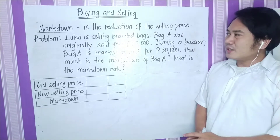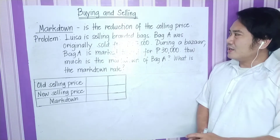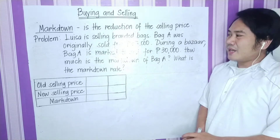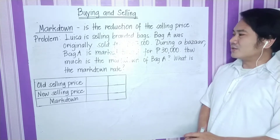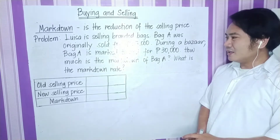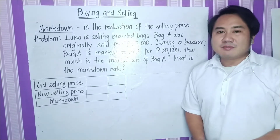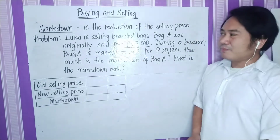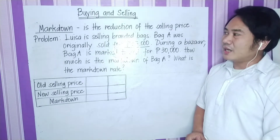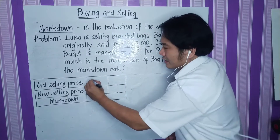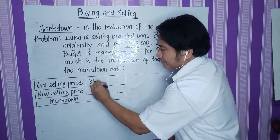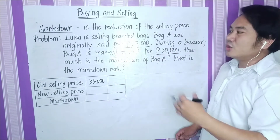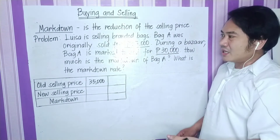Let us read the problem. Louisa is selling branded bags. Bag A was originally sold for 35,000 pesos. During a bazaar, bag A is marked to sell for 30,000 pesos. How much is the markdown of bag A? What is the markdown rate? The given in the problem: P35,000 is the original price of bag A — that is our old selling price. Next is P30,000, which is the new selling price of bag A during the bazaar.